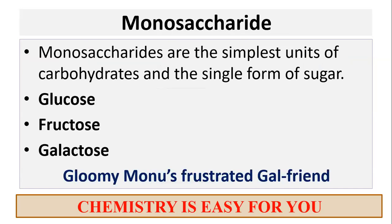Now let's see about monosaccharides. Monosaccharides are the simplest units of carbohydrates and the single form of sugar. Mono means one and it's the basic unit in carbohydrates. Fructose, glucose and galactose are monosaccharides. The sentence to memorize this is: 'Gloomy monos, frustrated galfriend.'